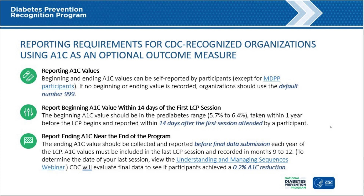The ending or post-intervention value should be collected and reported before the final date of submission for each year of the program. Post-intervention A1c measures must be recorded in months 9 through 12 to be used for evaluation. Once final data are submitted, CDC will determine if participants met the 0.2% A1c reduction. One final note: A1c can only be used with data submissions under the 2021 DPRP Standards going forward. CDC will not allow the retroactive addition of A1c values on previous data submissions under previous versions of the DPRP Standards.